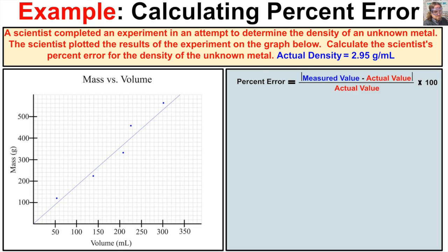In this example, a scientist completed an experiment in an attempt to determine the density of an unknown metal. The scientist plotted the results of the experiment on the graph below. Calculate the scientist's percent error for the density of the unknown metal. The actual density of this unknown metal happens to be 2.95 grams per milliliter.